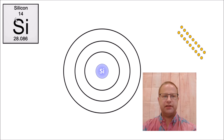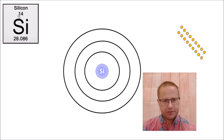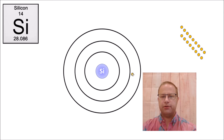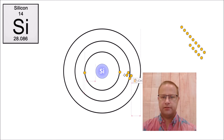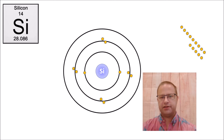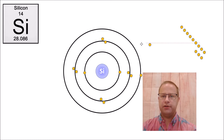Now let's take a look at silicon. Silicon has the atomic number of 14, which is rather large. Two electrons go in the first shell, leaving 12 additional electrons. Eight electrons go into the second shell, giving us two in the first and eight in the second — that's 10 electrons total. With 14 electrons total, I still need four more, and those go in the third shell: one, two, three, four.